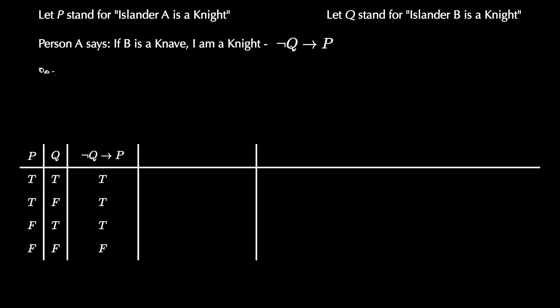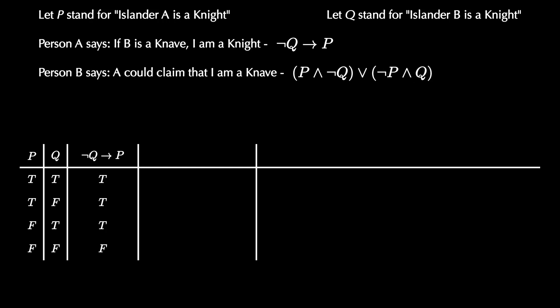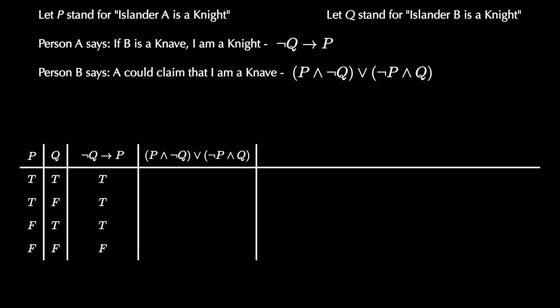Person B says something more complicated: the other could claim that I am a knave. We can interpret this as P and not Q, or not P and Q. This takes a moment to think about, but basically they have to be of different types. When we go through and fill in the truth table, we end up with F, T, T, F.